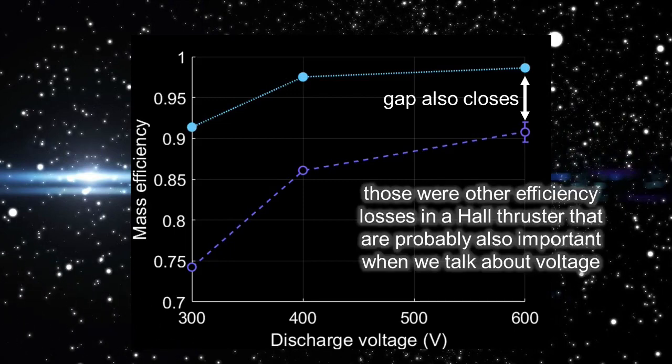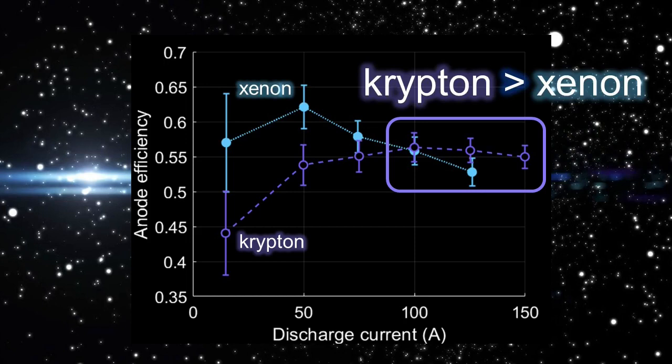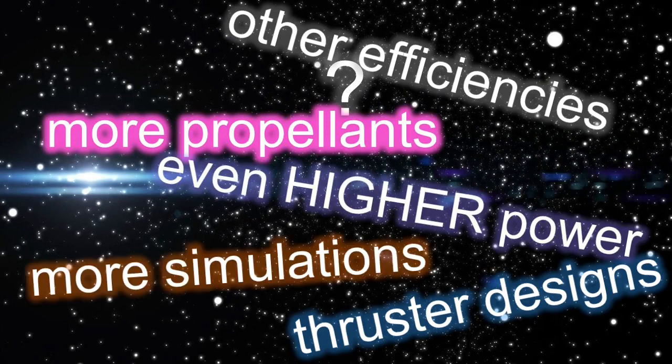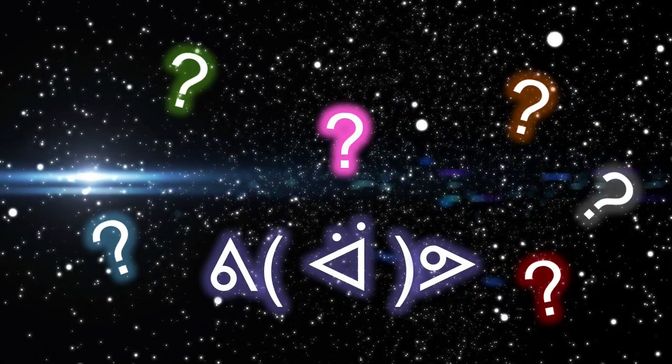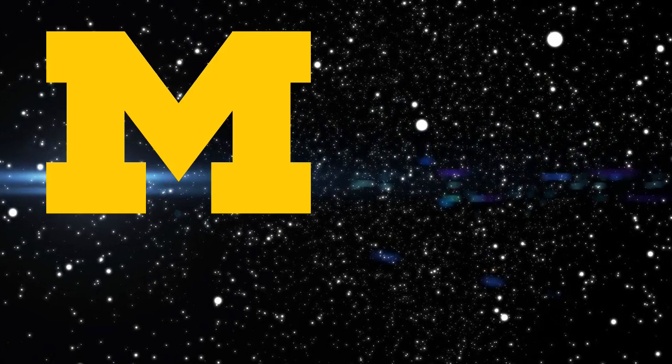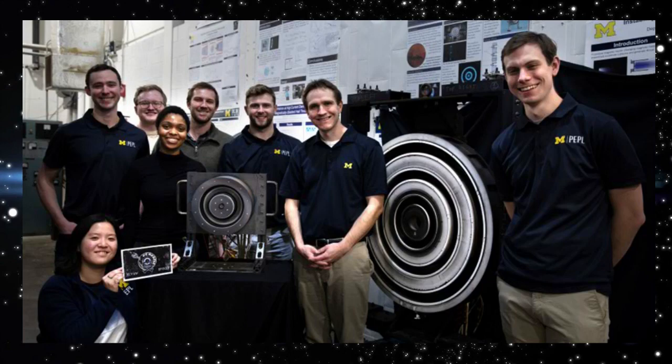So what did we learn? A whole lot of stuff. Krypton can be good now. What do we have left to learn? A whole lot of other stuff. Who's going to figure it out? It could be you. If you have questions, then ask them. Go get a PhD from anywhere, but probably from Michigan, and probably from PEPL—that's my lab. It's a good lab. Okay, that's all.